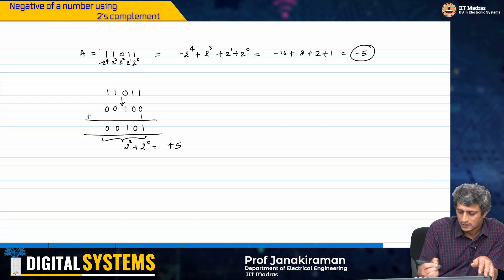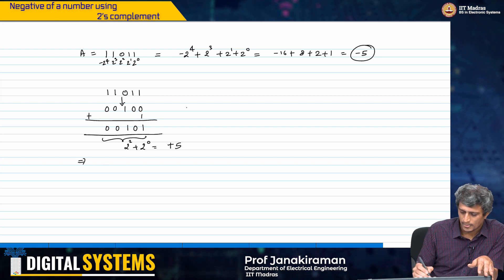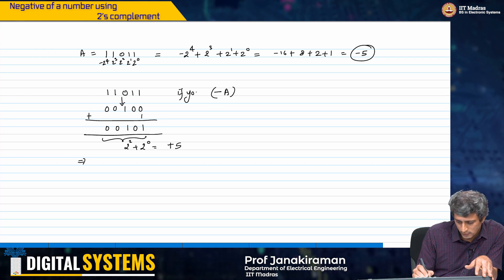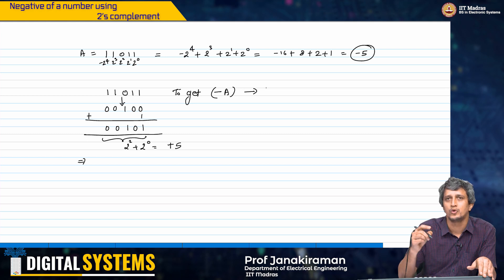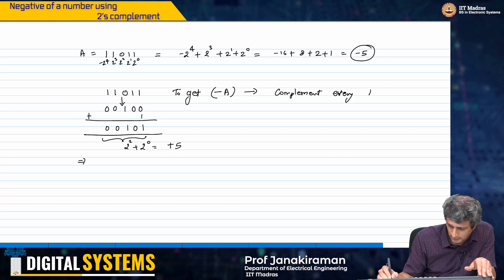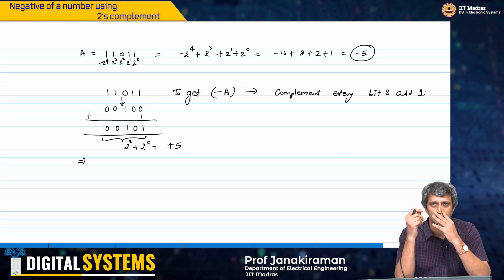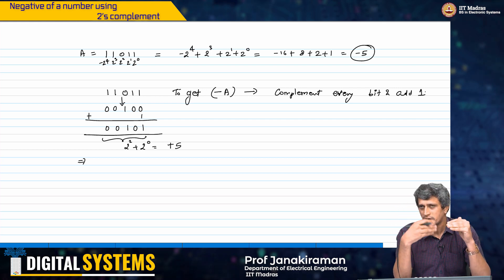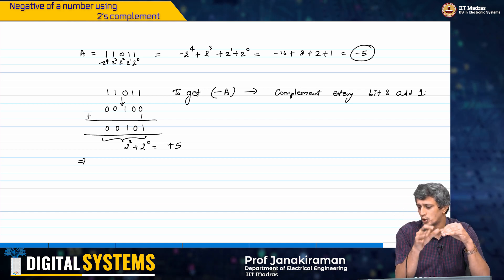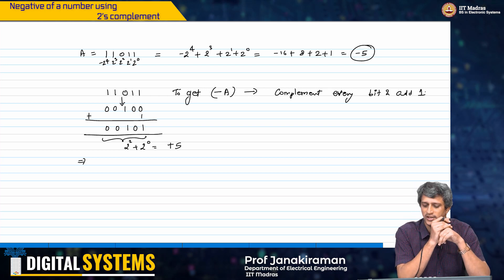So if this number is a — which is minus 5 — then to get minus a, you have to complement every bit and add 1 to it. We have not yet seen binary addition in detail, but when we do I will come back to this. You can also prove this just like we proved the sign extension case.